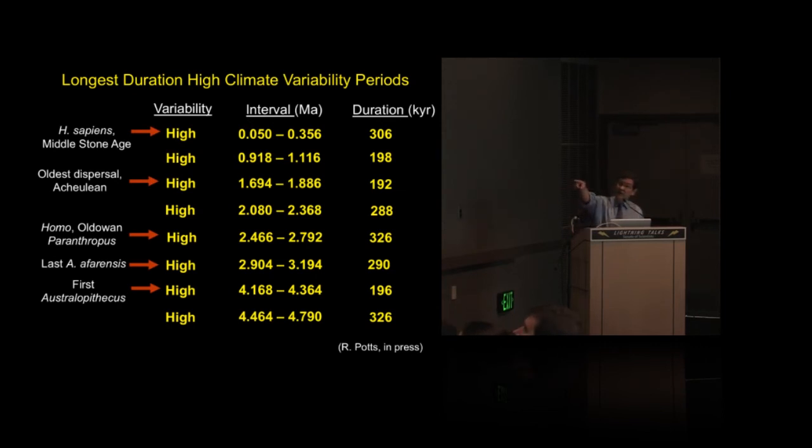All of the genera that essentially define the human evolutionary tree—Australopithecus, Homo, and Paranthropus—happened to have their first appearances during high climate variability. And all of the major changes in stone technology and the ways that early ancestors interacted with their surroundings—Oldowan, Acheulean, and the Middle Stone Age—also have their first appearances and evolutionary developments during high climate variability periods. I just want to finish with that last period.